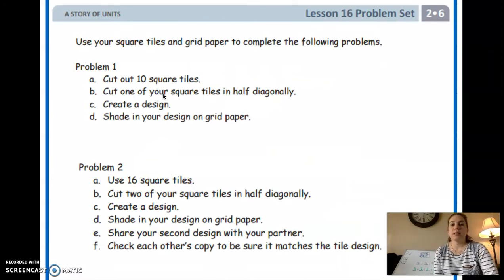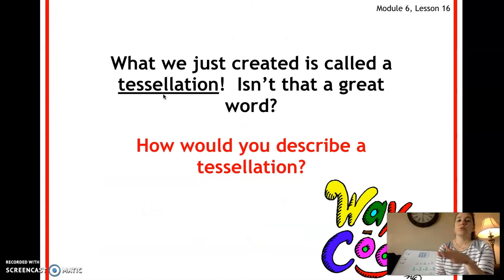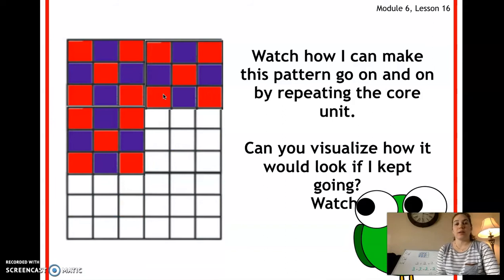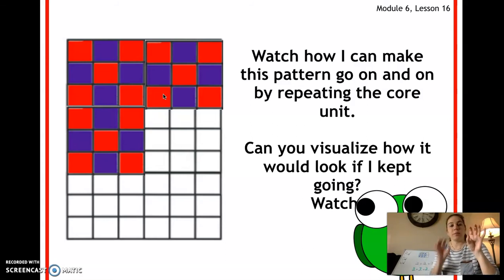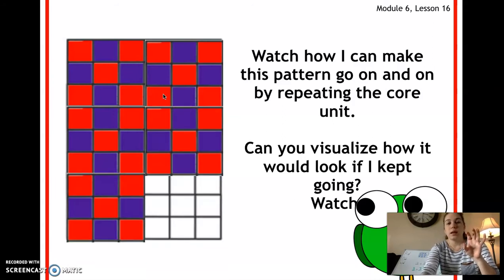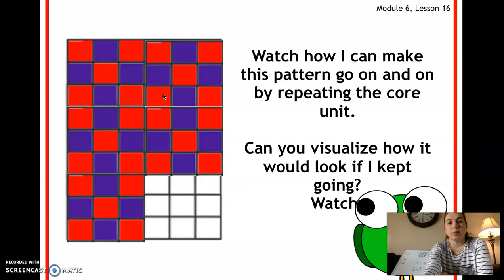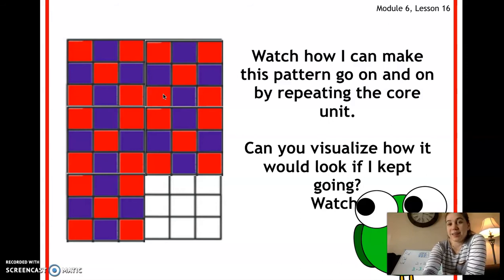For lesson 16, our problem set is a little different than normal. Instead of doing what they have here, I want you to create your own tessellation — your own pattern. It can be something like we did here, or it can be a repeating picture of an animal or something you see outside. Remember, a tessellation means you're repeating it over and over again. If you do a dog, you have to draw a dog and a kid, then repeat it again — a dog and a kid, again, and keep going. Have some fun with this. Draw pictures, draw something you'd like to be doing. I remember creating a tessellation when I was in second grade and I still have it at my parents' house!